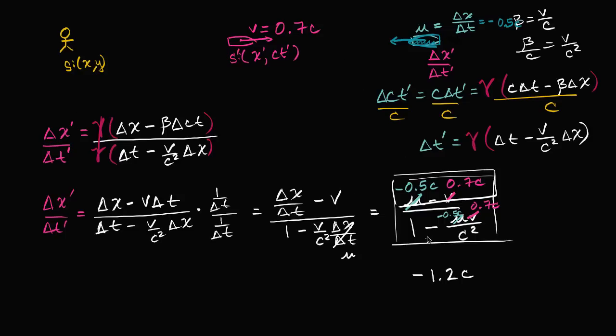But luckily we have all this business at the bottom that keeps us from violating the absoluteness of the velocity of light. This notion that nothing can travel faster than the speed of light. Because then in our denominator we're going to get 1 minus, let's see, 0.5c times 0.7c. 0.5 times 0.7 is going to be 0.3. So 0.3c squared.